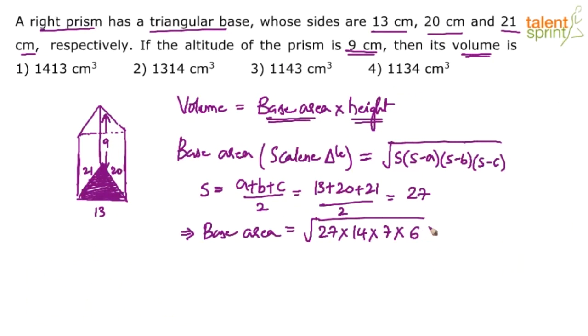So basically try to write these numbers, composite numbers as powers of prime numbers. So this can be taken as 2 into 3. This can be taken as 2 into 7. And this is anyway 3 cube. So if you see overall, it is like 3 power 4. 3 cube and 3 here into 2 squared into 2 squared into 7 squared. So what will come outside? We want the base area. So simplify this part.